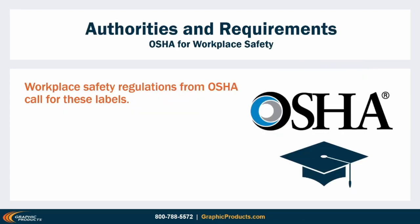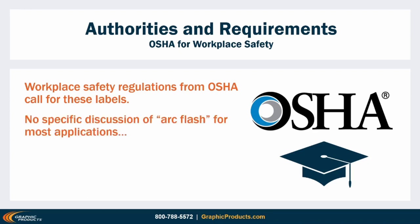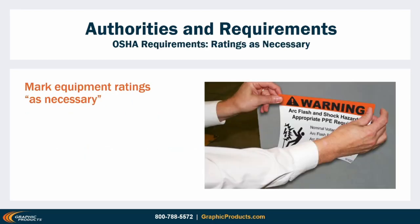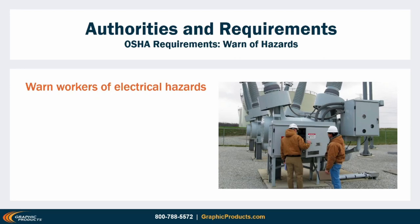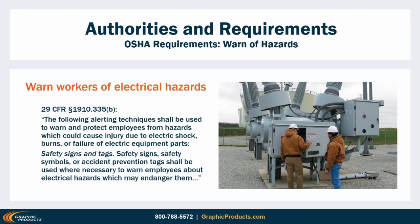Arc flash hazard labels are also required by workplace safety laws. Here in the United States, OSHA's regulations only specifically mention arc flash at the utilities level, but several of their regulations for general workplaces also apply. OSHA requires electrical equipment in the workplace to be marked with voltage, current, wattage, or other ratings as necessary. This starts with manufacturer labels, but employers are responsible to provide the information needed for the use and maintenance of the equipment.